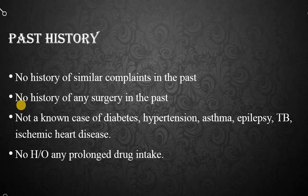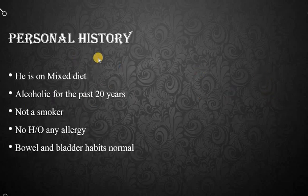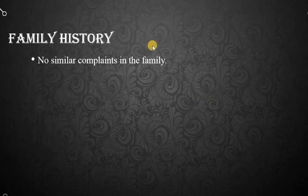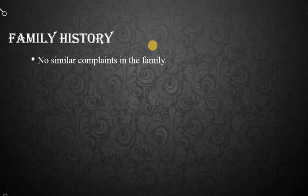In personal history, he is on a mixed diet, alcoholic, not a smoker, no history of allergy, normal bowel and bladder habits. Smoking is important because it causes damage to collagen, which may in turn cause damage to the valves of the veins. Family history: there is no similar complaint in the family. Varicose veins can run in families; this familial condition is known as Klippel-Trénaunay syndrome, characterized by abnormal lateral venous complex (short saphenous system), capillary nevus, bony abnormalities, aplasia of deep veins, and limb lengthening.